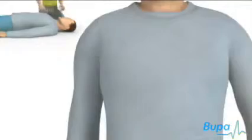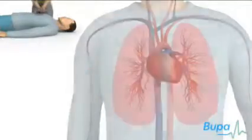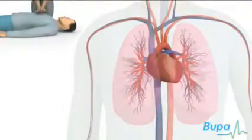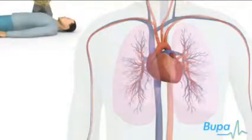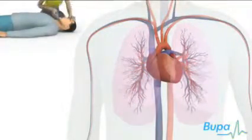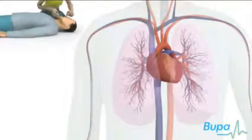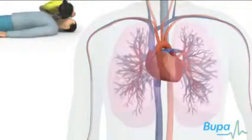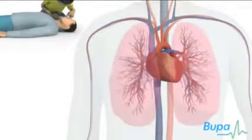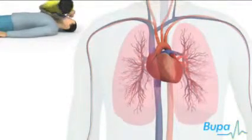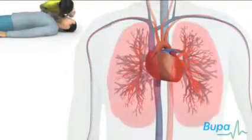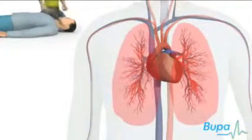Performing CPR will keep oxygenated blood flowing around the casualty's body until the emergency services arrive. Remember, you need to do cycles of 30 chest compressions, followed by two rescue breaths.